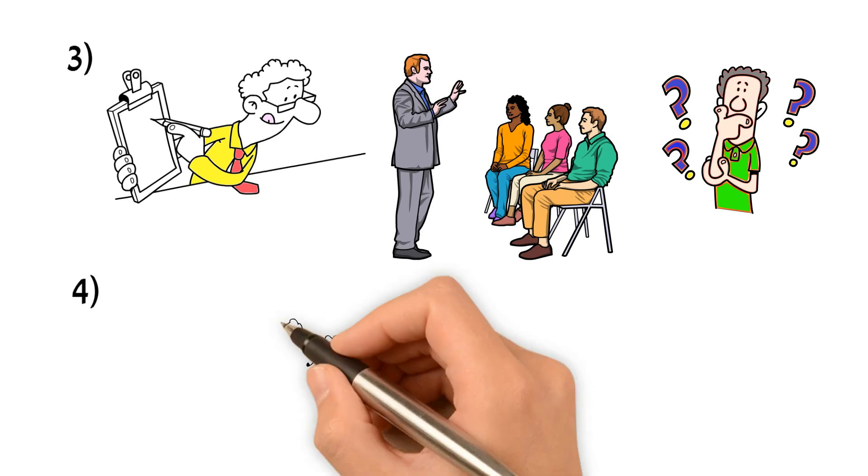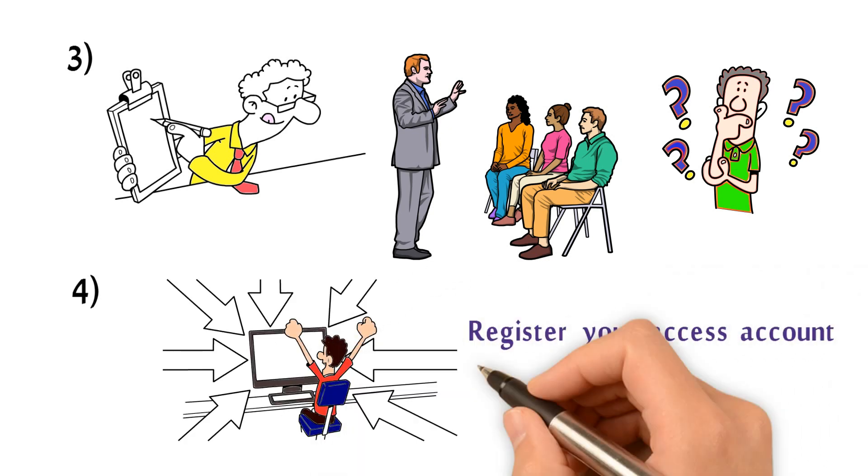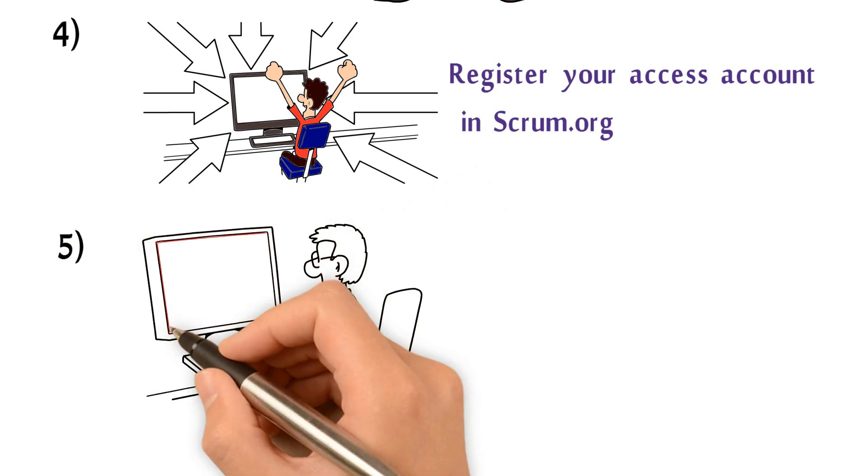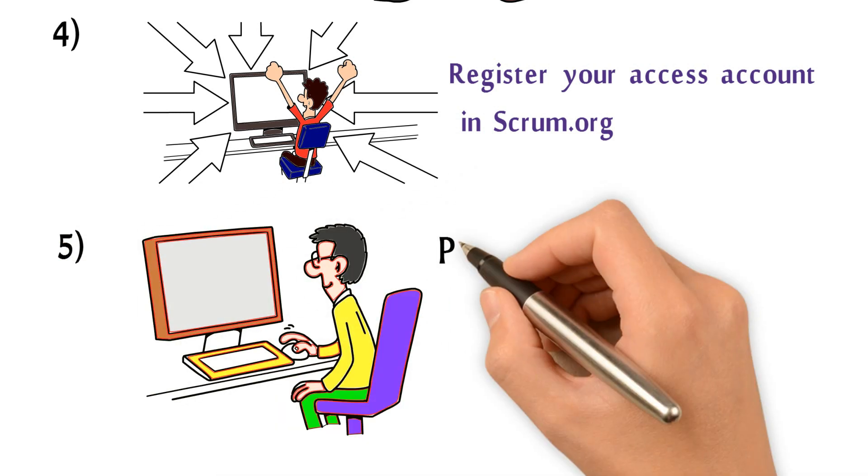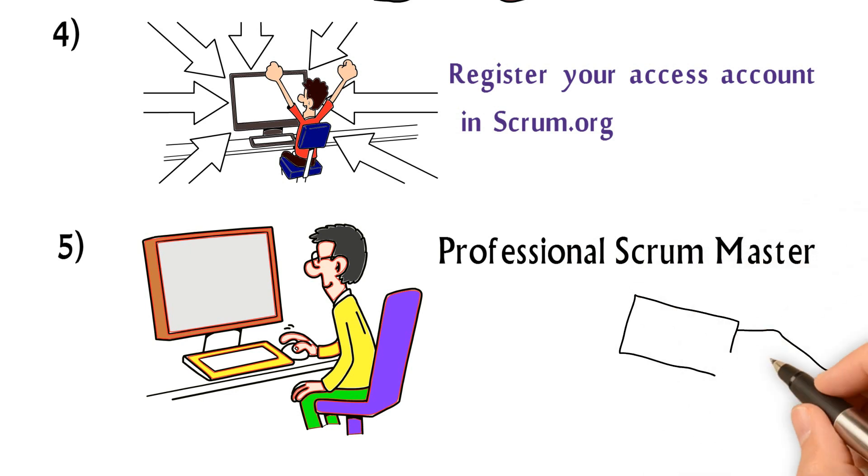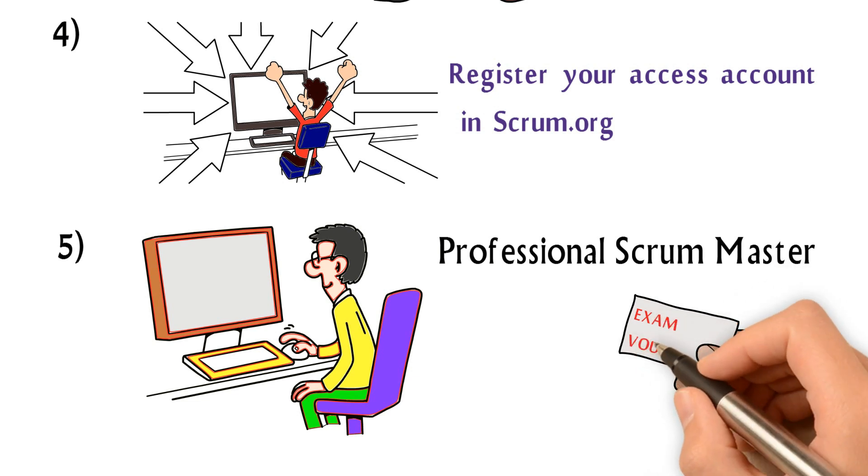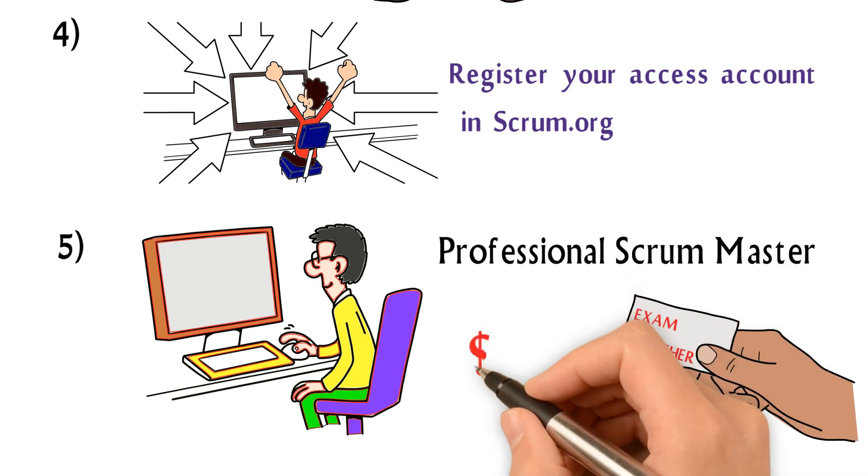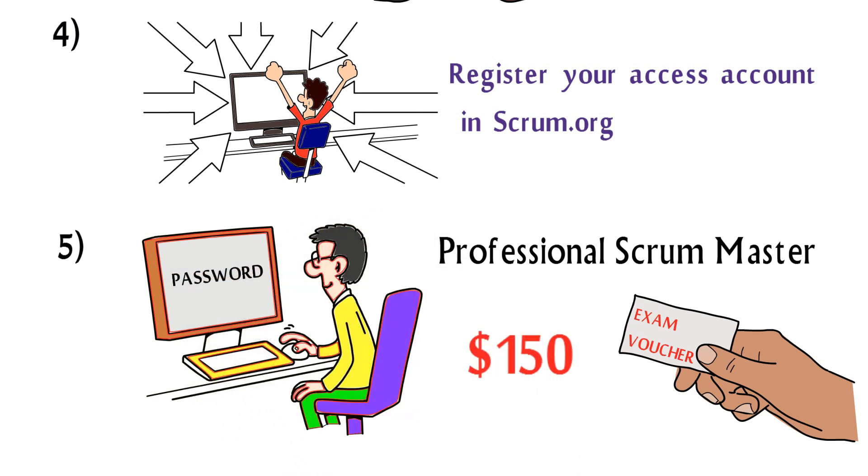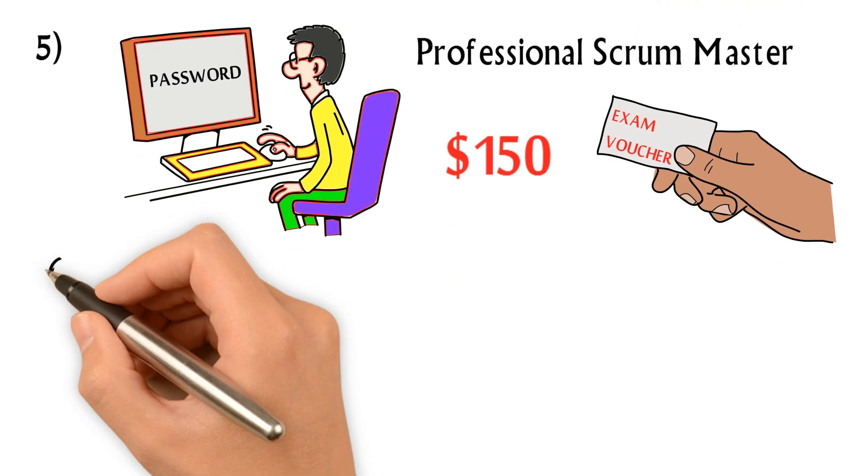Four, register your account in Scrum.org. Five, click Professional Scrum Master link under the Certification menu drop-down in Scrum.org website and start to buy the exam voucher. Exam course is $150. You should receive a password for your PSM 1 exam within one business day.